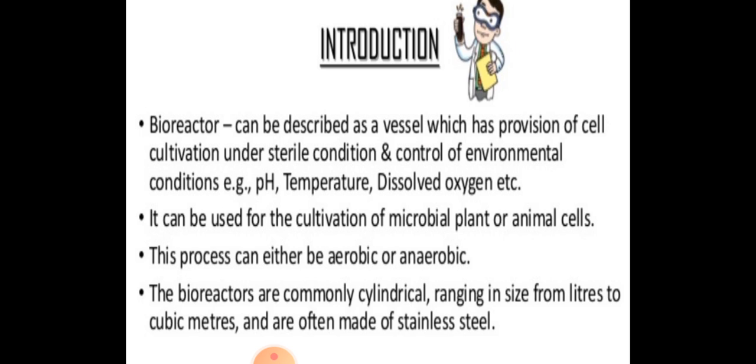So it can be used for the cultivation of microbial, plant, or animal cells. This process can either be aerobic or anaerobic. The bioreactors are commonly cylindrical, ranging in size from liters to cubic meters, and are often made of stainless steel.